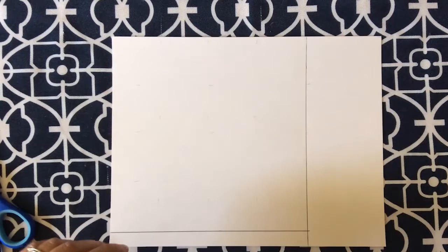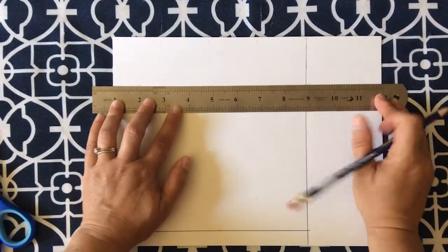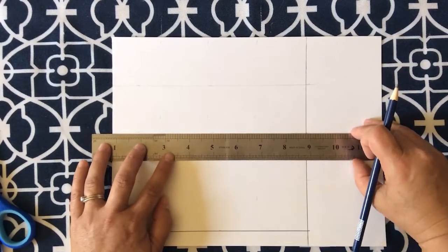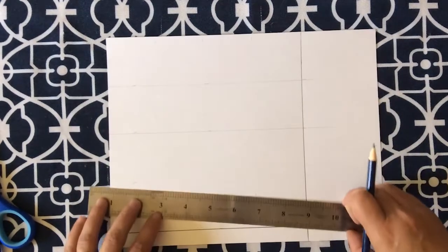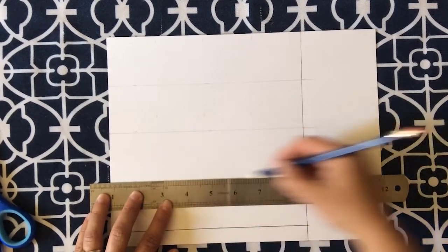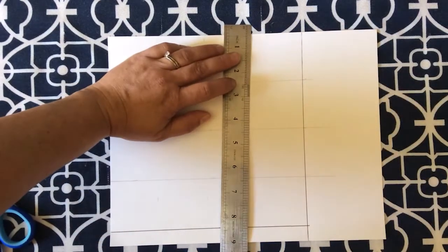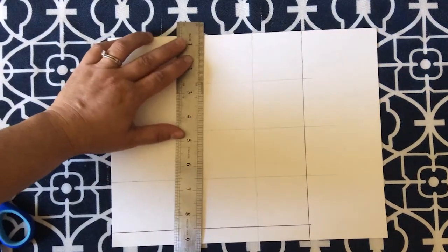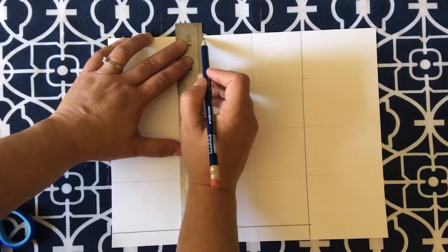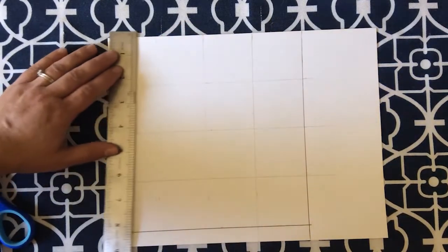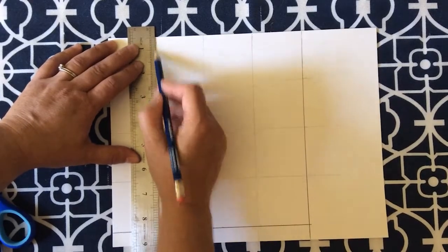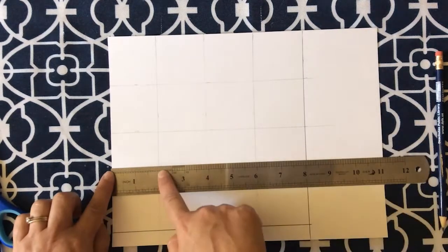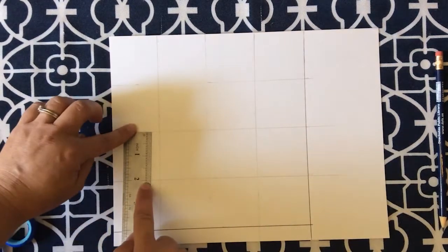Now very lightly draw your grid. Connect these marks to make your two by two inch grid. It's one direction. Let's go the other direction, two last lines. And there we go. Now you have a grid that is a two by two inch square.